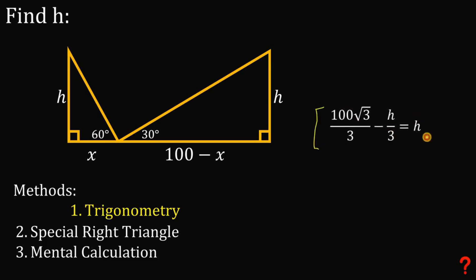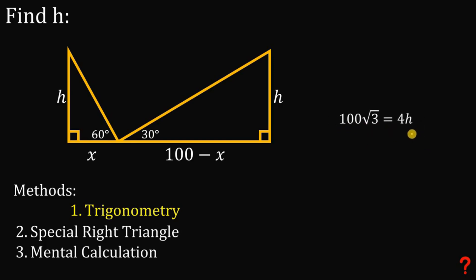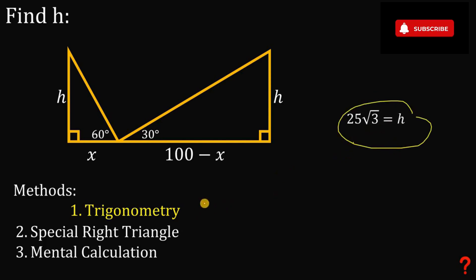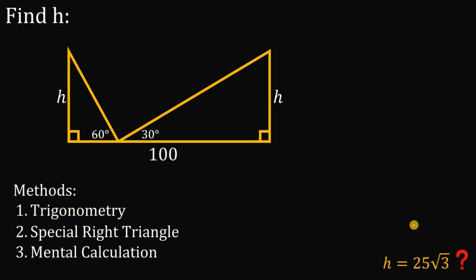Multiplying both sides by 3, we get 100 square root of 3 minus H equals 3H. Adding H to both sides gives 100 times square root of 3 equals 4H. Dividing both sides by 4, we get H equals 100 over 4 times square root of 3, which is simply 25 times square root of 3. That is the value of H using trigonometry.